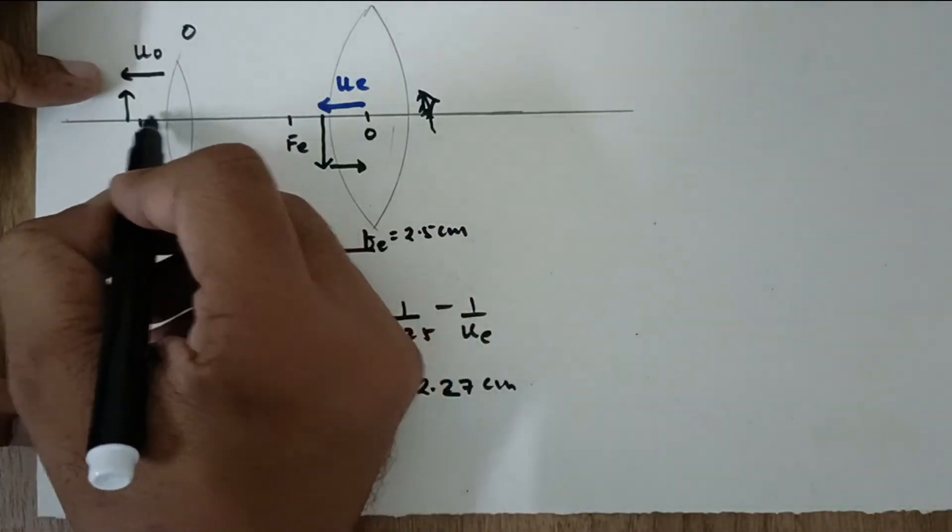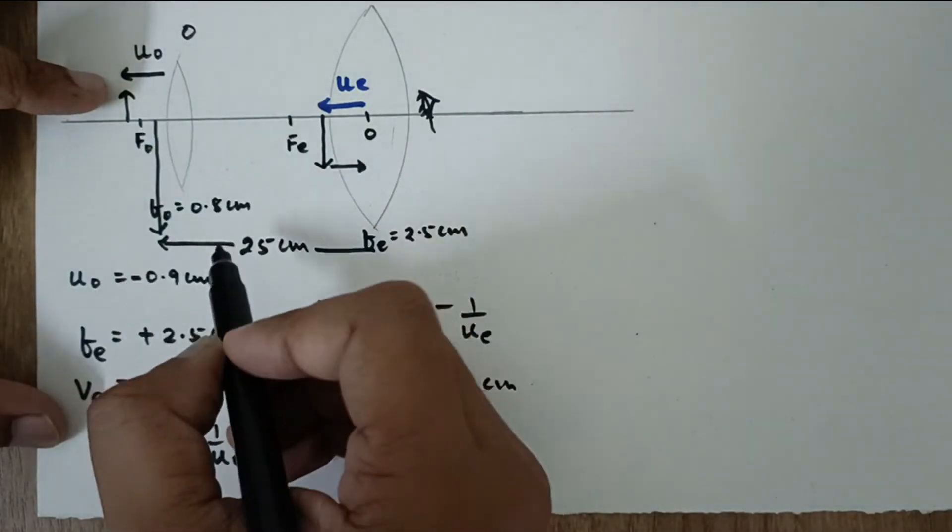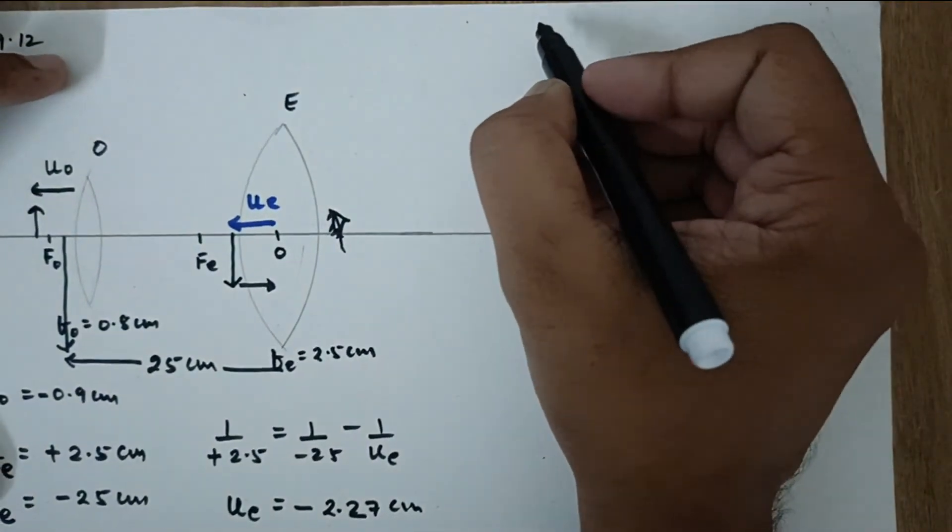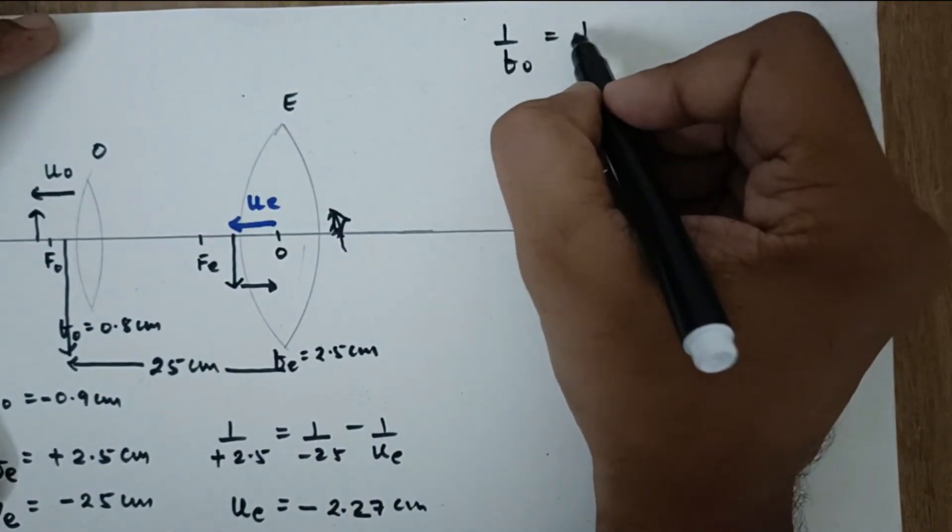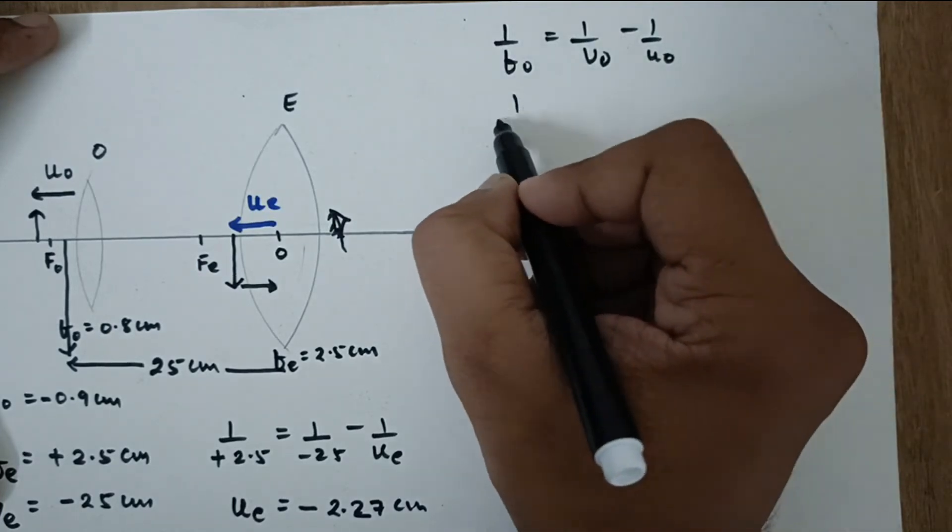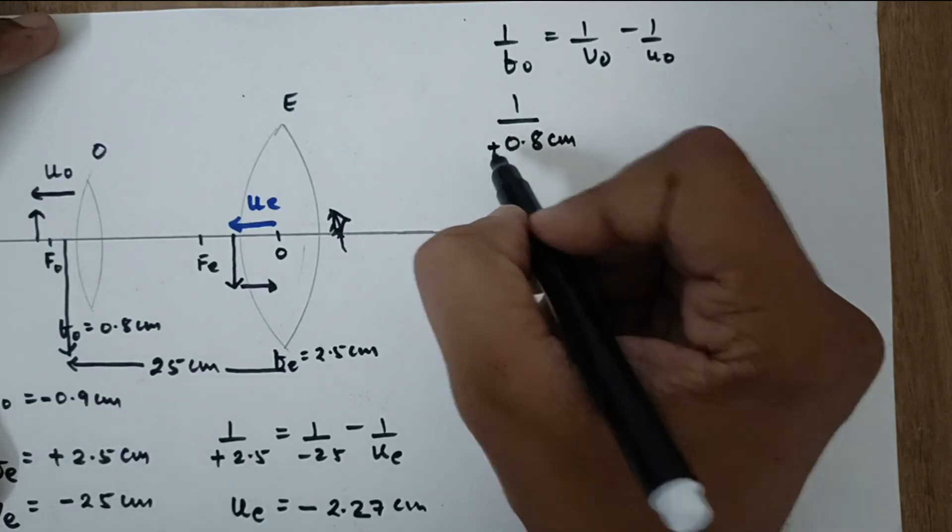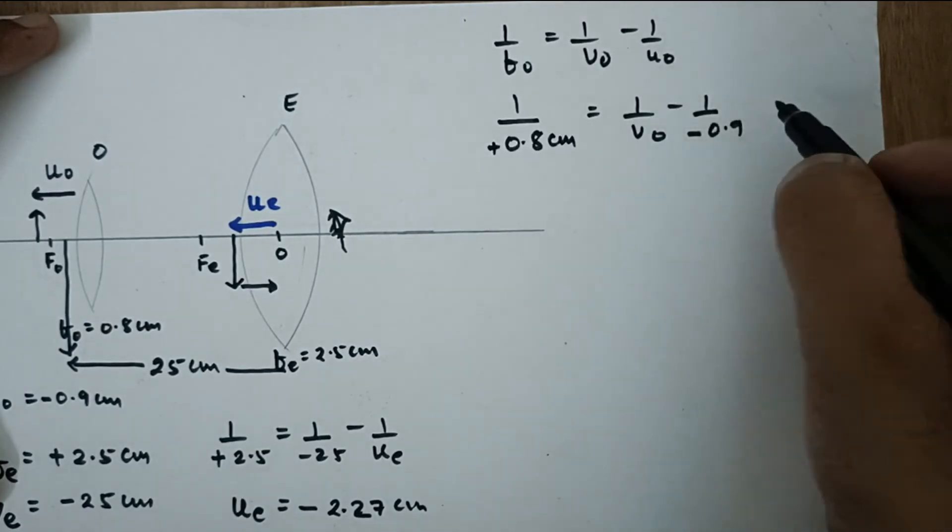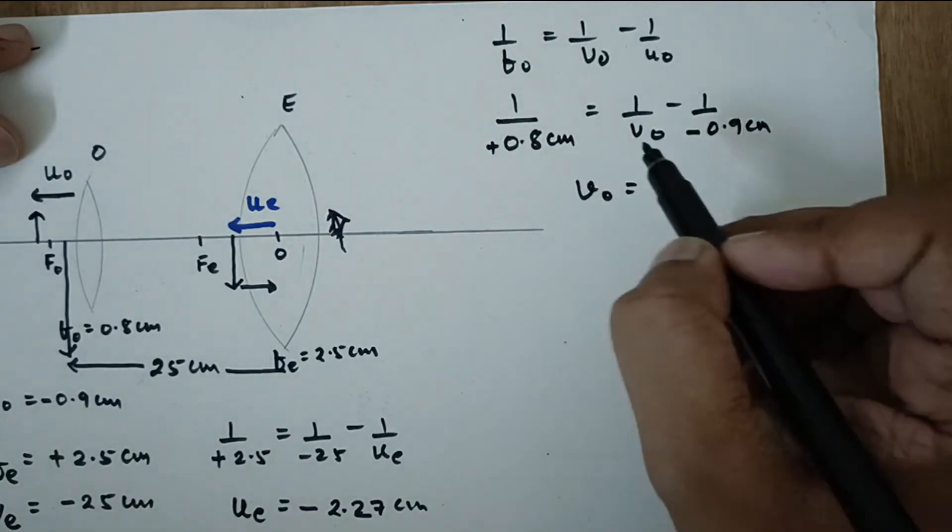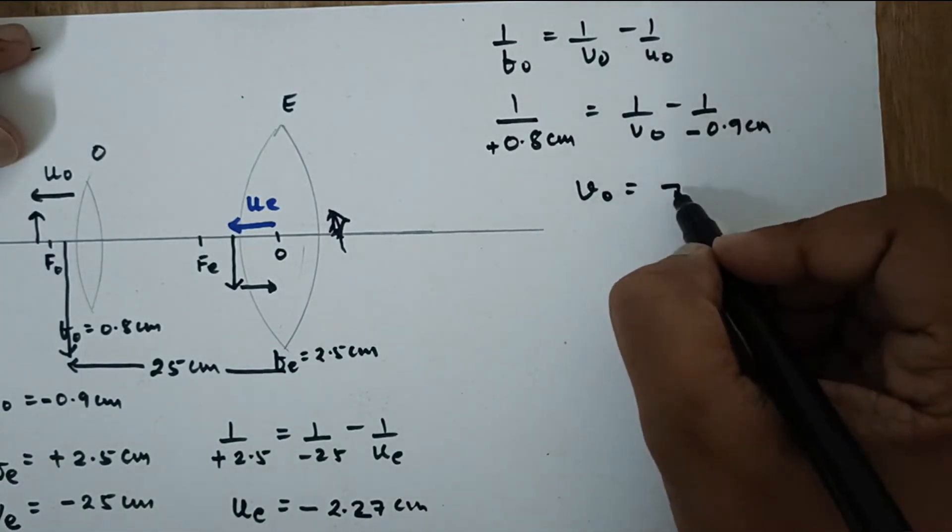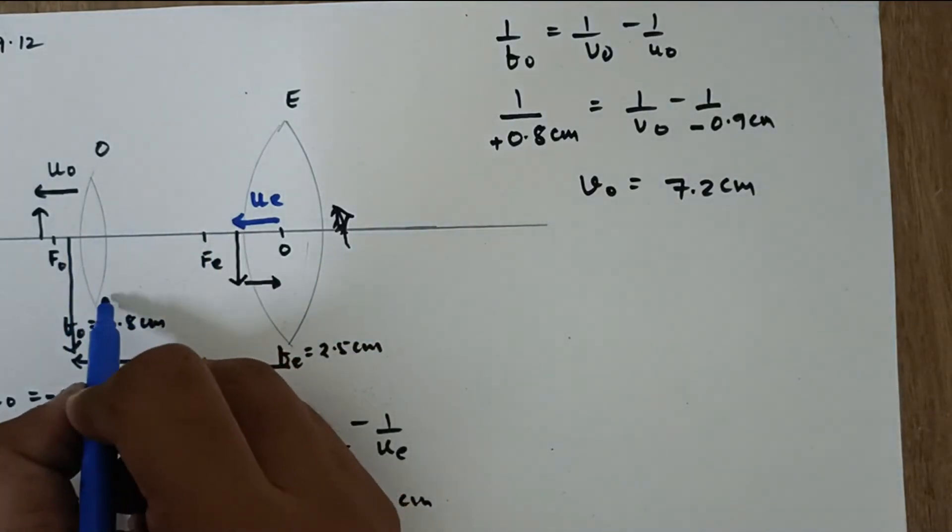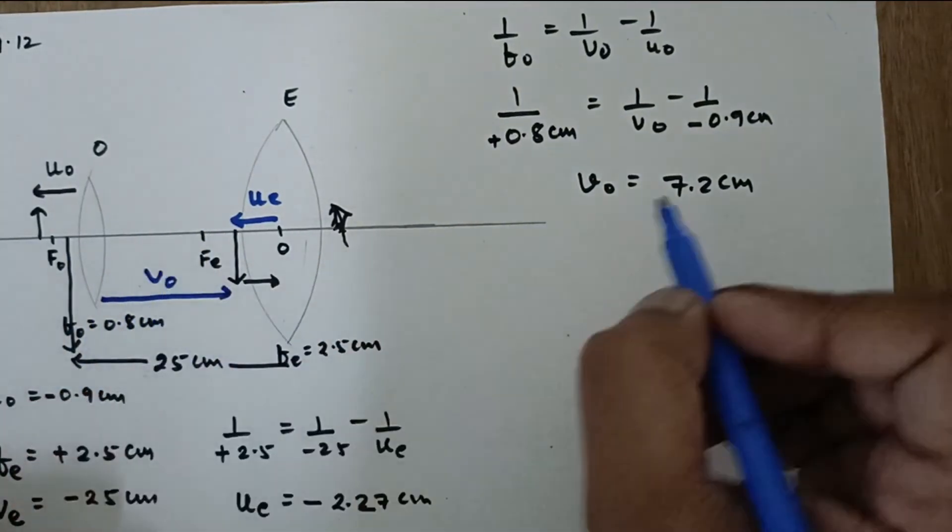So let us find out that. This is UO. Now UO is object distance so negative and that is already given as 0.9 cm negative. FO is plus 0.8 cm. So 1 upon F. Now if you solve this equation you will get the value of VO as 7.2 cm.